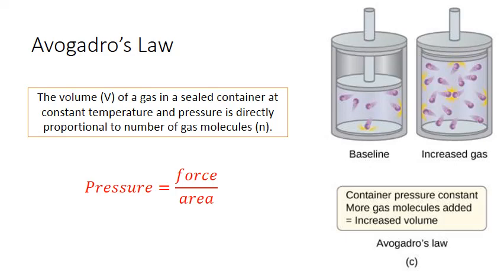Avogadro's law states that the volume of the gas in a sealed container at constant temperature and pressure is directly proportional to the number of gas molecules, N. So if we increase the number of gas molecules at a constant temperature, they'll actually be colliding with the walls of the container more frequently — with the same amount of energy because it's a constant temperature, but there will be more collisions, and that means the force inside the container will increase. In order to maintain constant pressure, the surface area inside the container must also increase, and that means the volume of the container increases. This is Avogadro's law.